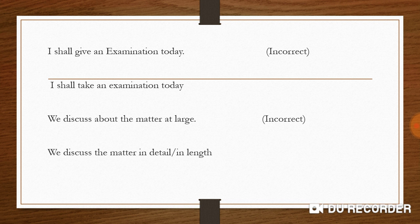Third sentence: 'We discuss about the matter at large.' Keep in mind that 'discuss' is like 'reach' — just as 'love,' 'hate,' and 'resemble' take no preposition, 'discuss' also never takes any preposition. The correct sentence is: 'We discussed the matter in detail' — no 'about' needed.